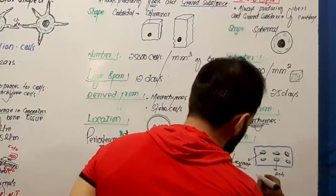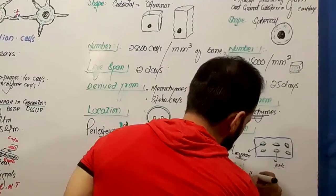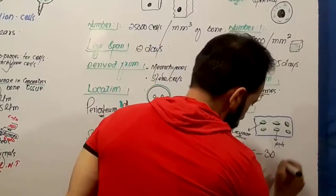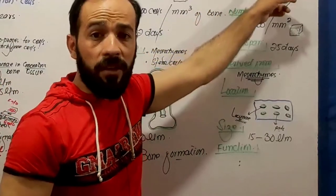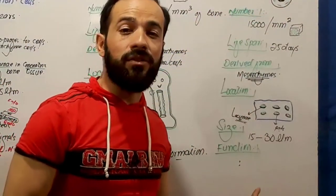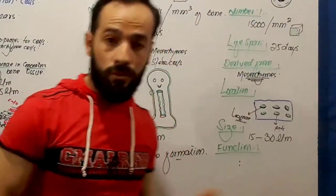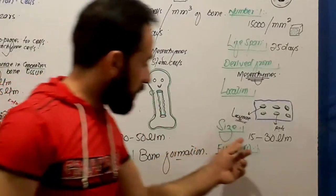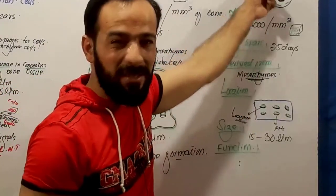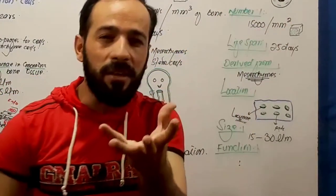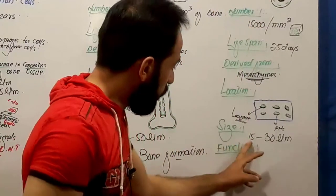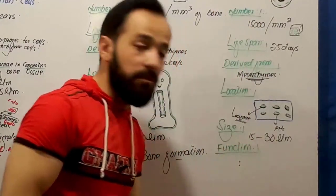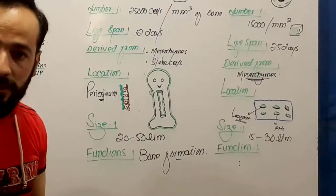What is their size? Their size is about 15 to 30 micrometers. In the previous lecture I told you about chondrocytes that their size is about 7 to 30 micrometers, so the size of these blasts is a little bit larger than the size of the cyte cells. They are 15 to 30 micrometers in size.